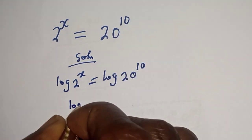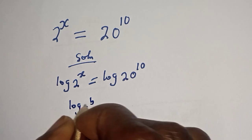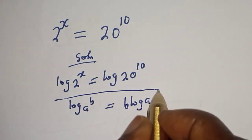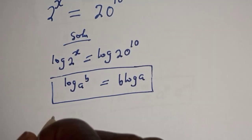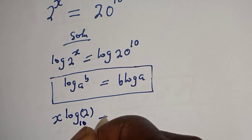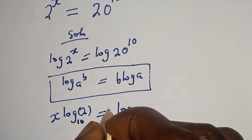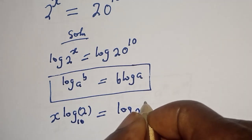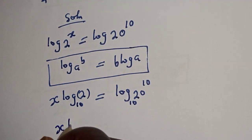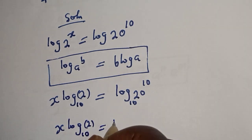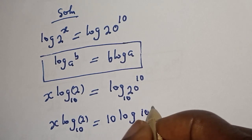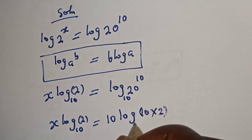Let's take the log of both sides: log 2 raised to power S is equal to log 20 raised to power 10. Then, if you have log a raised to power b, this is equal to b log a. So this becomes S log 2, making everything base 10, equal to 10 log 20 base 10.